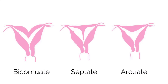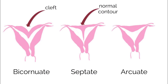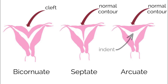Looking at a few of these side by side: bicornuate, septate, and arcuate uterine anomalies can be difficult to differentiate. With bicornuate uteri, there is a cleft in the outer contour of the fundus. The septate uterus has a normal outer contour, and the septum is usually fibrous but can have muscular components. In an arcuate uterus, there is also a normal outer contour with a mild indent of the endometrium at the uterine fundus.